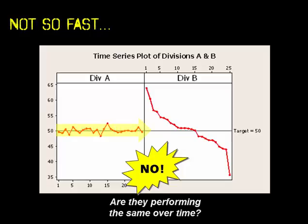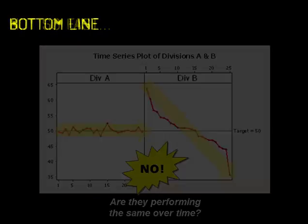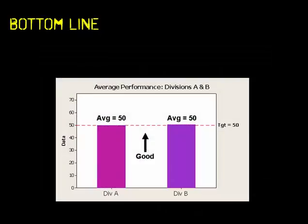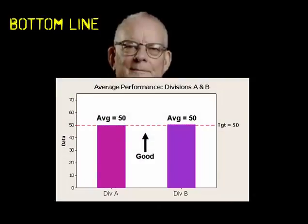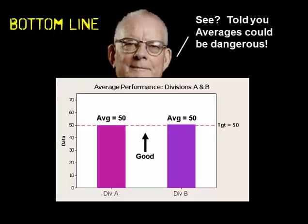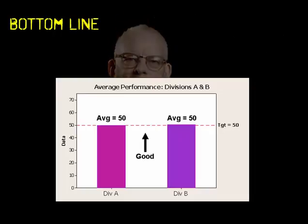Division B, however, started off like gangbusters—remember, higher is better—but they immediately went into a death spiral from which they did not recover. So the bottom line is that their averages look exactly the same, and Deming was right: they can be dangerous.